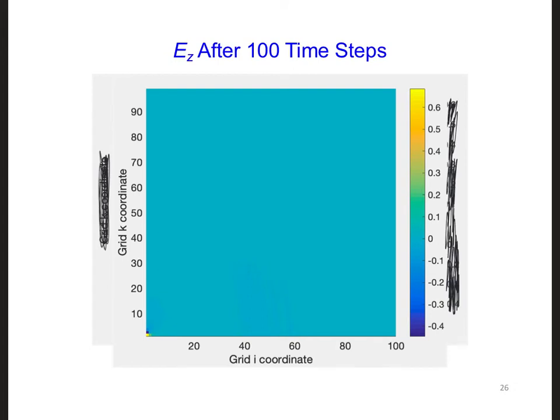This is what I got for my plot of EZ. Everything looks blue. If we look at the color bar, we can see that blue corresponds to about zero.